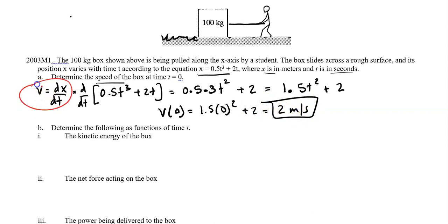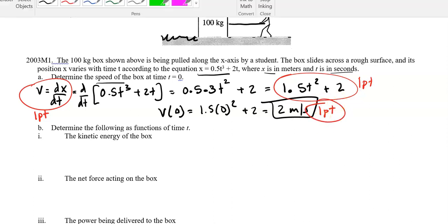So for the AP rubric, we'll get one point for correctly using or saying that we need to take the derivative of position with respect to time, one point for correctly taking the derivative, and then one point for your answer.